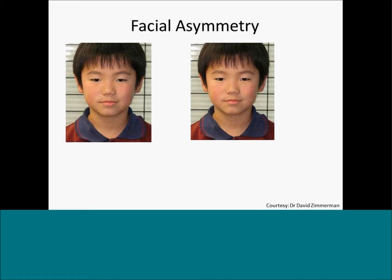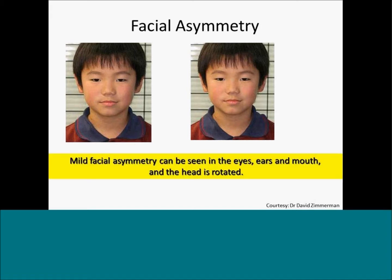Looking at these photographs, the face looks quite symmetrical until you examine it in more detail. You'll find mild facial asymmetry in the eyes — drawing a line straight across, the lateral canthus of the eye on one side is above the line, while on the opposite side it's a little bit lower. Looking at the ears, one ear is further down compared to the other side, confirming the counterclockwise head rotation we saw earlier.